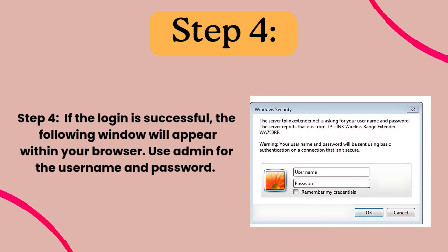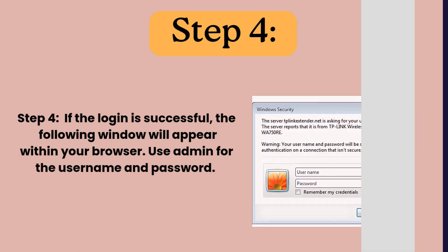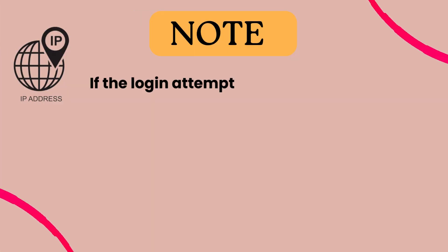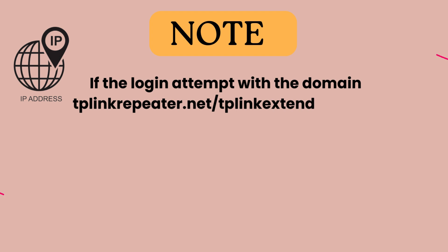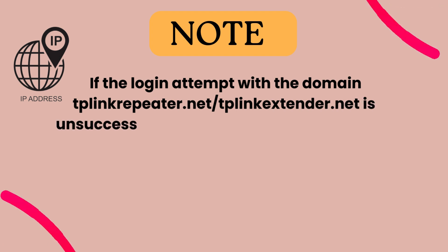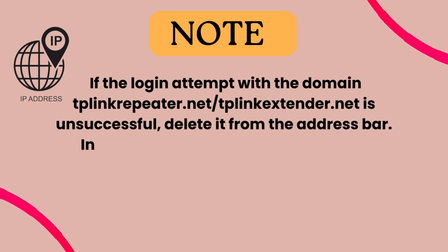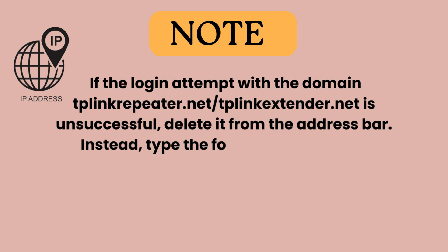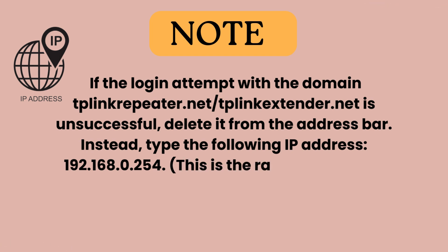Step 4. If the login is successful, the following window will appear within your browser. Use admin for the username and password. Note: if the login attempt with the domain tplinkrepeater.net or tplinkextender.net is unsuccessful, delete it from the address bar and instead type the following IP address: 192.168.0.254. This is the range extender's default IP address.